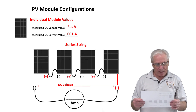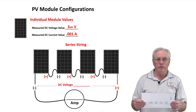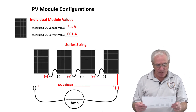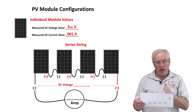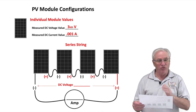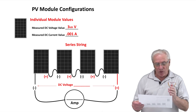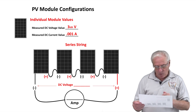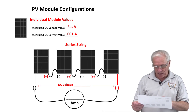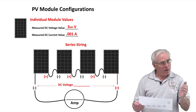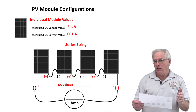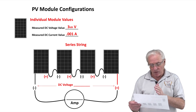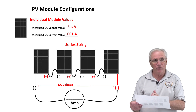Next we'll look at a series connection for the PV modules. On screen you'll see the same drawing I have. We've determined that each module produces about 3-ish volts, and we measured the current at 0.001 amperes. When connecting in series, the current should remain at 0.001 amperes, but the voltage should add together for all four modules.